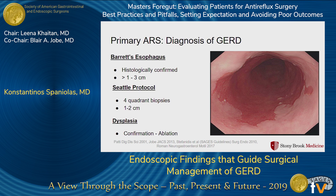Barrett's esophagus is not the same from patient to patient. For both the initial evaluation and subsequent surveillance endoscopies, we need to very thoroughly and carefully evaluate the pathologic segment to rule out any dysplasia. This requires four-quadrant biopsies every one to two centimeters, at least for the first evaluation.